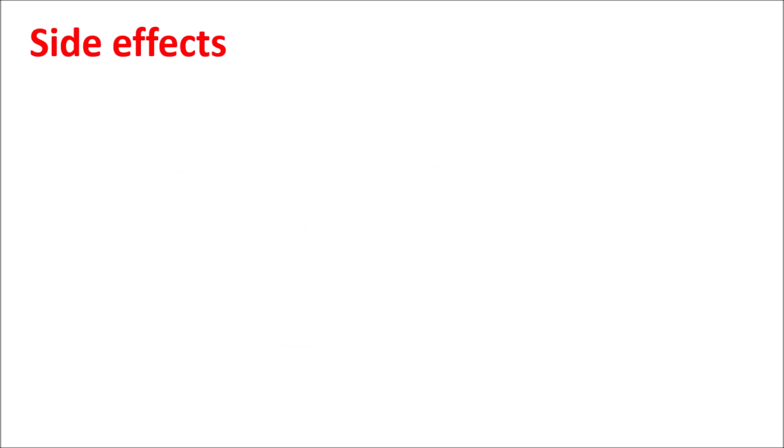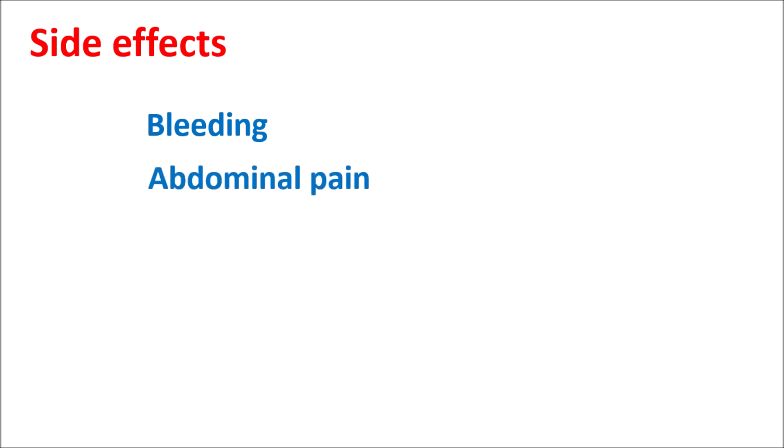Now let us look at the side effects of Edoxaban. The important side effects are mainly related to its anticoagulant effects: it can produce bleeding, sometimes abdominal bleeding leading to abdominal pain. It can also produce anemia, fatigue, and skin rashes.